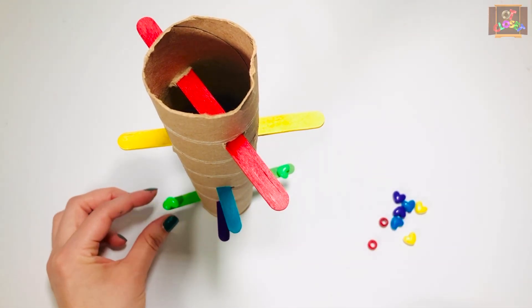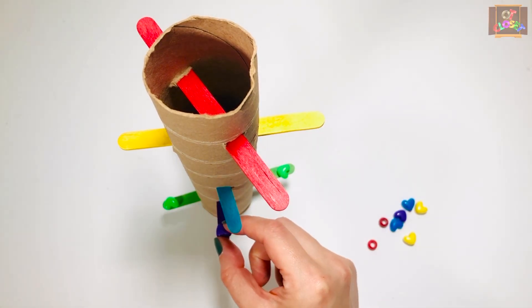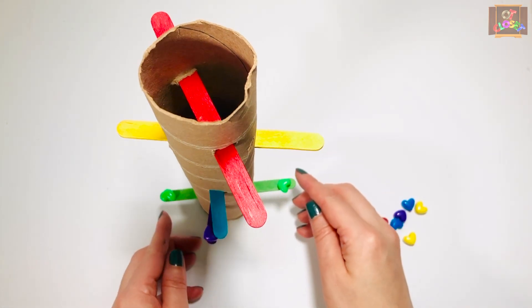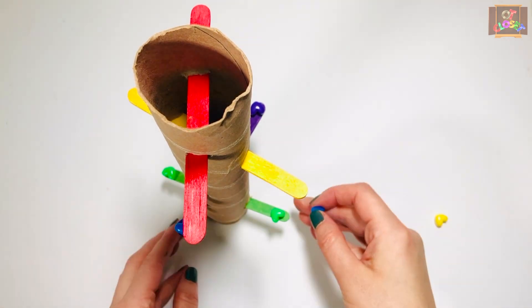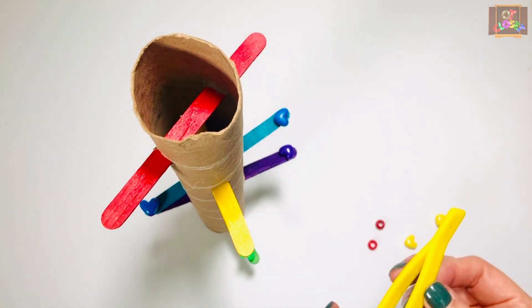The kids need to master their pincer grasp to place the beads on the corresponding color of the popsicle sticks. To make this activity more challenging, you can use tweezers.